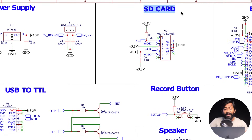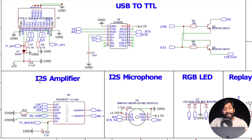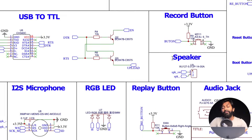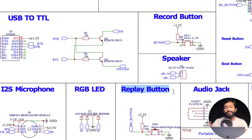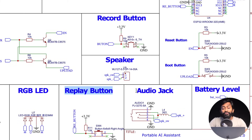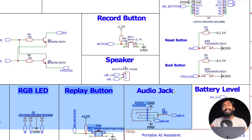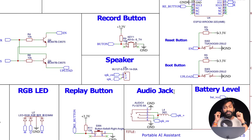We are using an I2S microphone for recording audio, which is later stored on the SD card. A record button is provided so the device only listens when the button is pressed. After generating the answer, it speaks out the response with the help of the I2S amplifier and an onboard speaker. We also provided an RGB LED acting as a status indicator. There is a replay button in case you want to hear the same answer again. There is also an audio jack so you can insert headphones and listen privately — if the headset is removed, the answer plays via speaker.